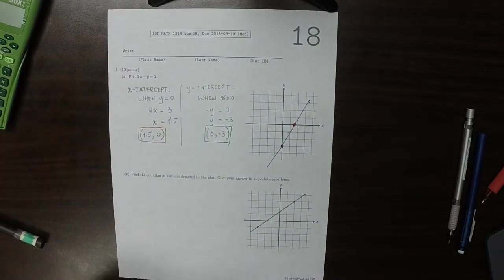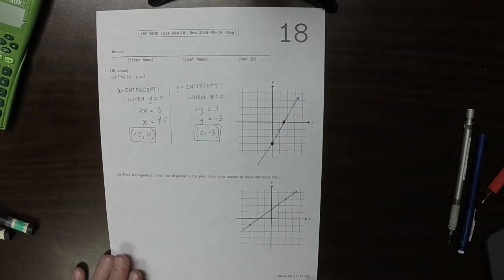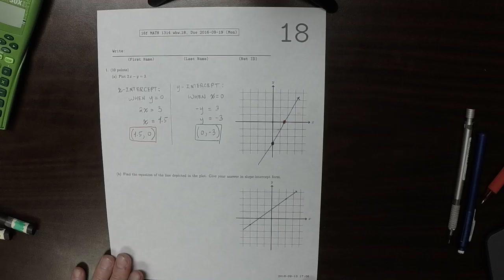More or less like that. So now, for part b, find the equation of the line depicted in the plot. Give your answer in slope-intercept form.